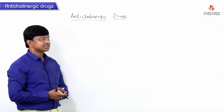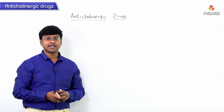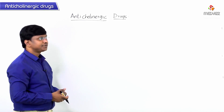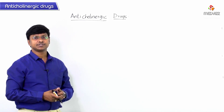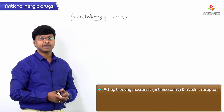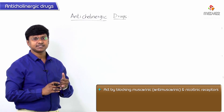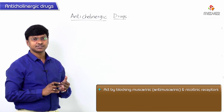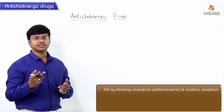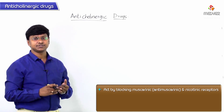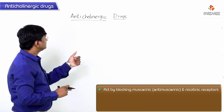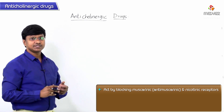Let me discuss the anticholinergic drugs. These drugs act by blocking the muscarinic receptors as well as nicotinic receptors. The cholinergic drugs show their action by stimulating the muscarinic and nicotinic receptors, whereas the anticholinergic drugs block both muscarinic and nicotinic receptors.